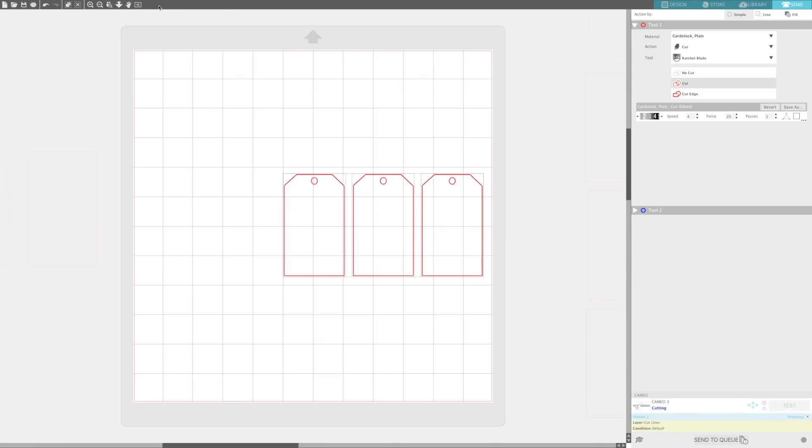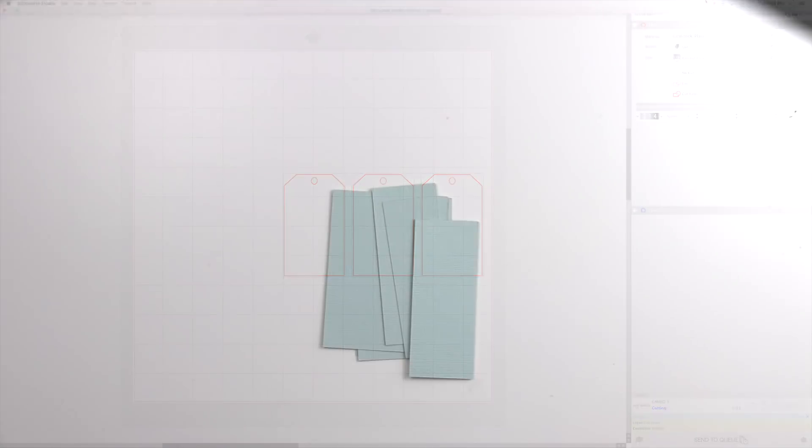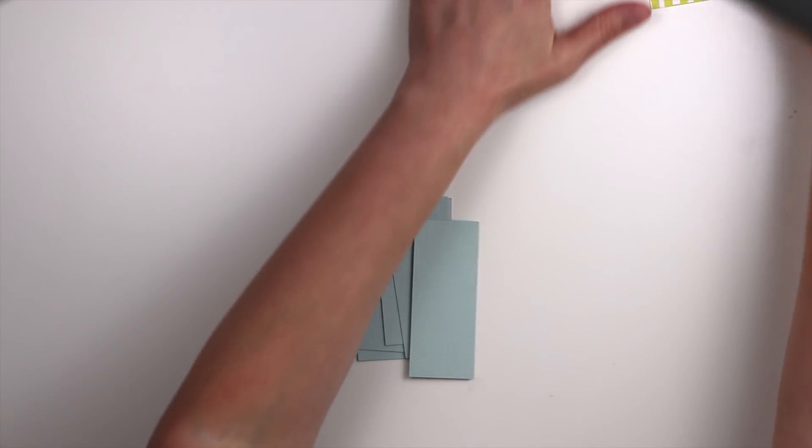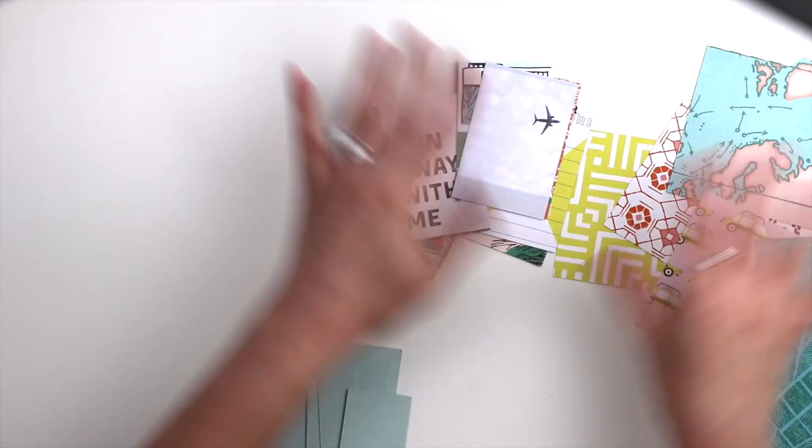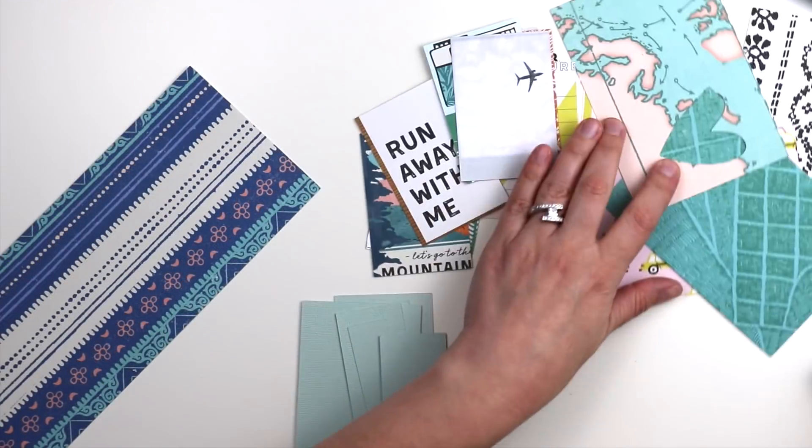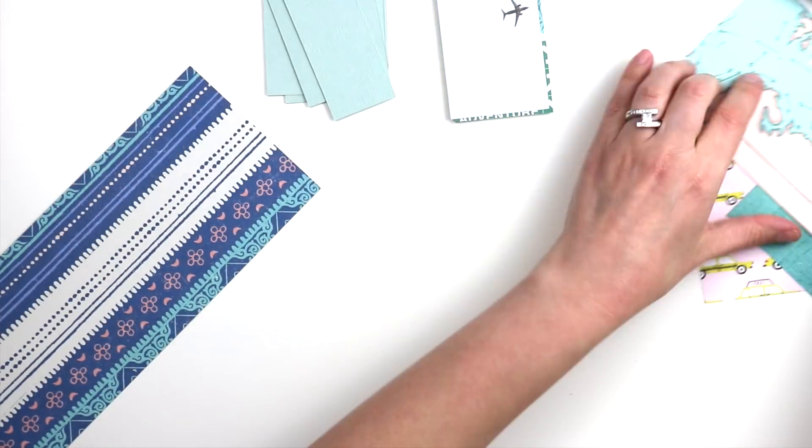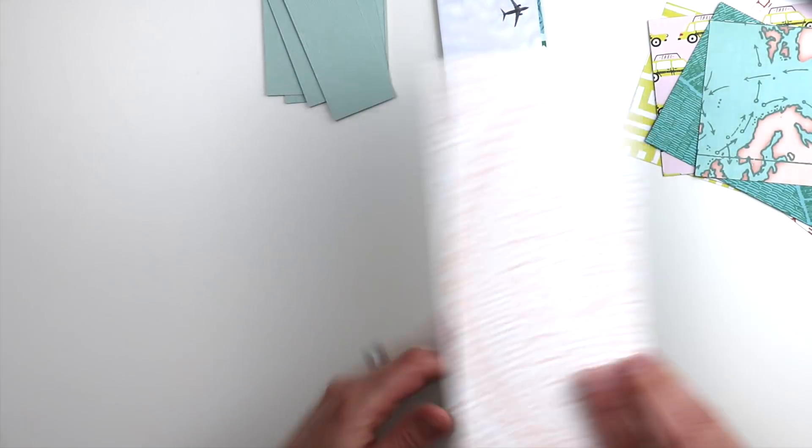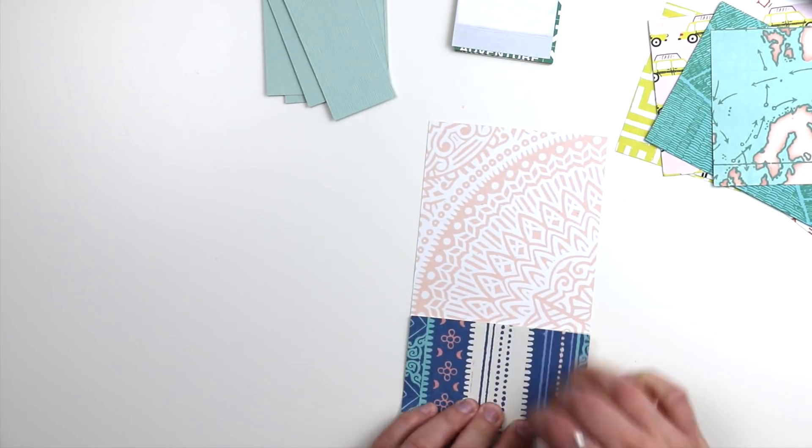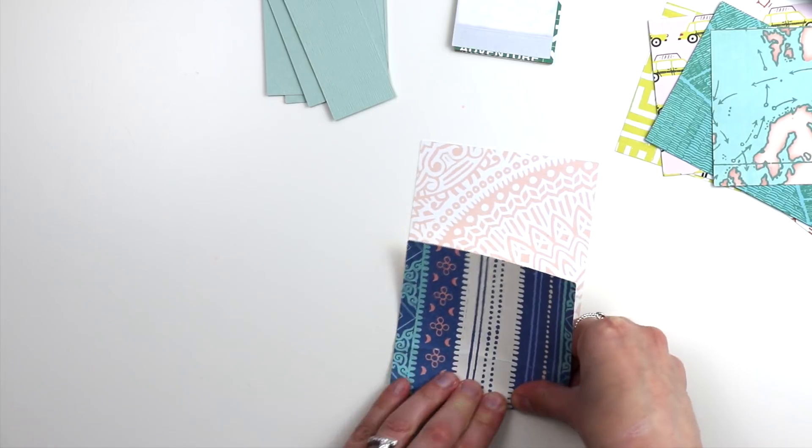I'm going to cut those also from the mint cardstock. The mini album is ready to be assembled. So I have all of my pieces and I'm going to start with the base, which is this pretty pink on one side and blue striped on the other side paper.